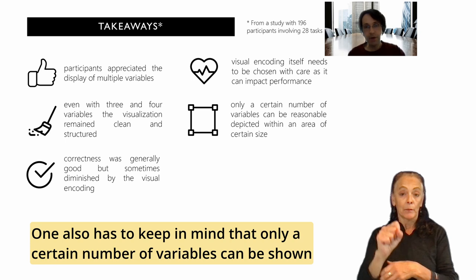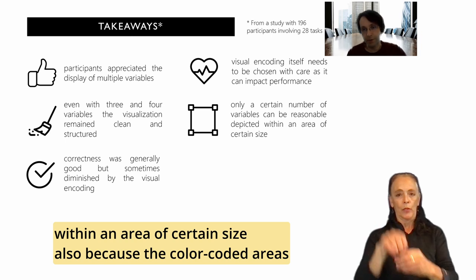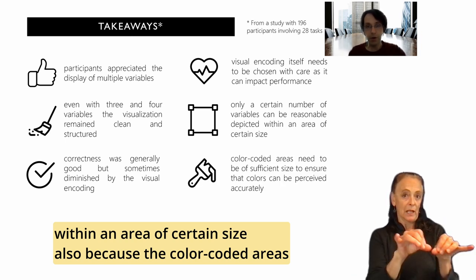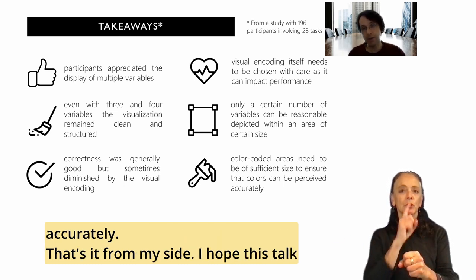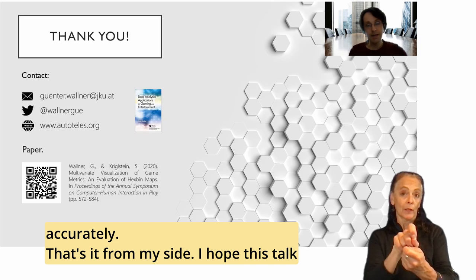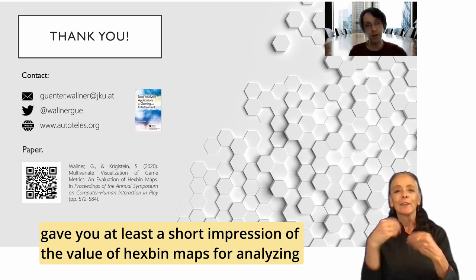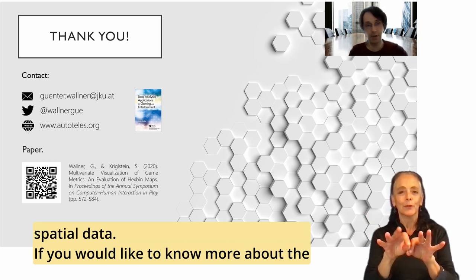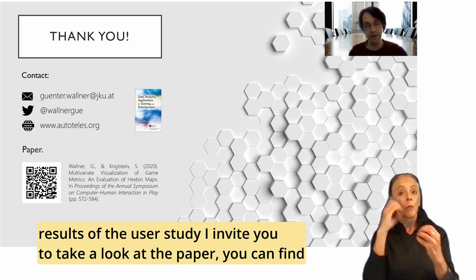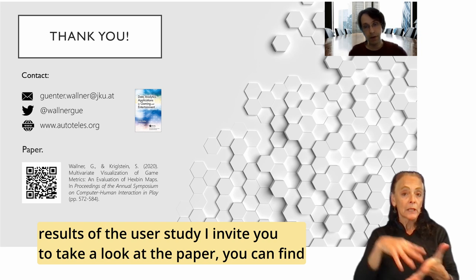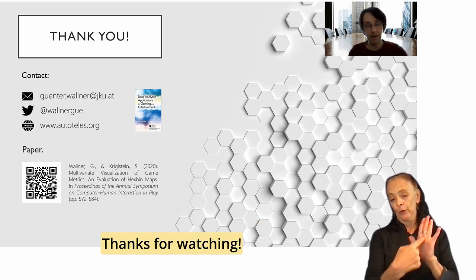One also has to keep in mind that only a certain number of variables can be shown within an area of a certain size, also because the color-coded areas need to have sufficient size to ensure that the colors can be perceived accurately. That's it from my side. I hope this talk gave you at least a short impression of the value of hexpin maps for analyzing spatial data. If you would like to know more about the results of the user study, I invite you to take a look at the paper — you can find the reference and the link to the paper here on this slide. Thanks for watching.